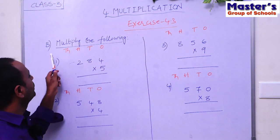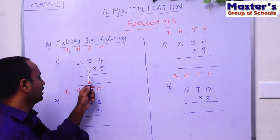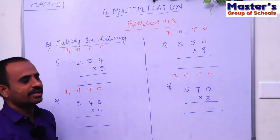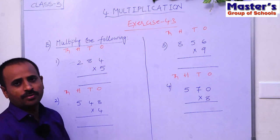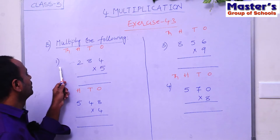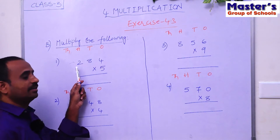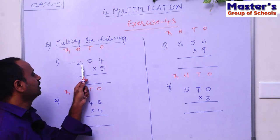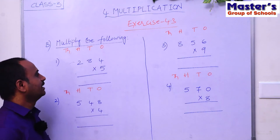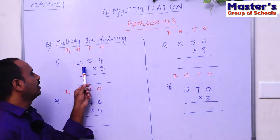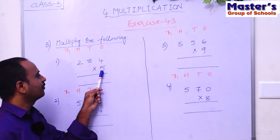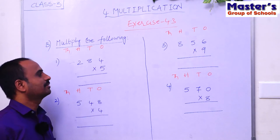Section B says: 'Multiply the following.' There are four multiplication problems. Let us see the first problem. The given three-digit number is 284, and we have to multiply 284 with 5 — a single-digit number.